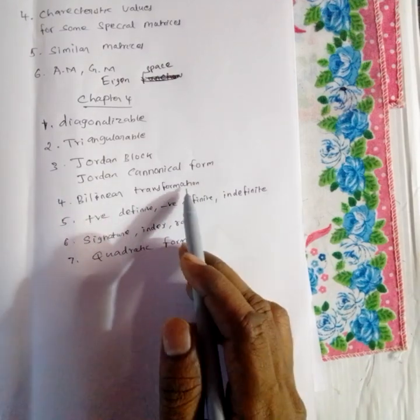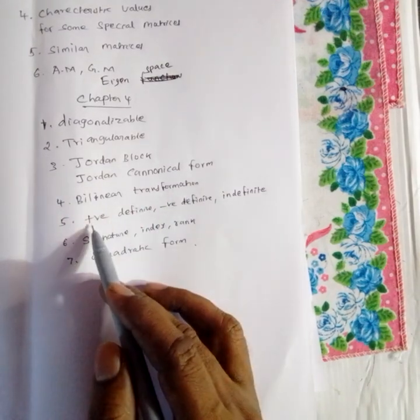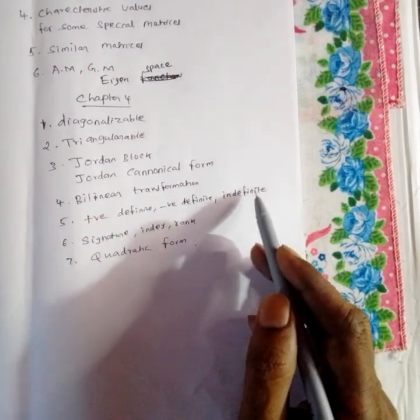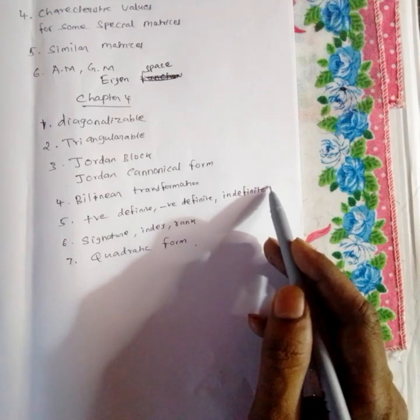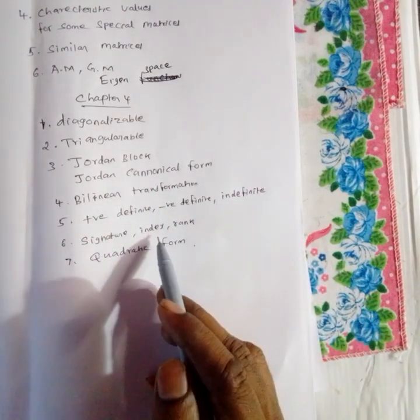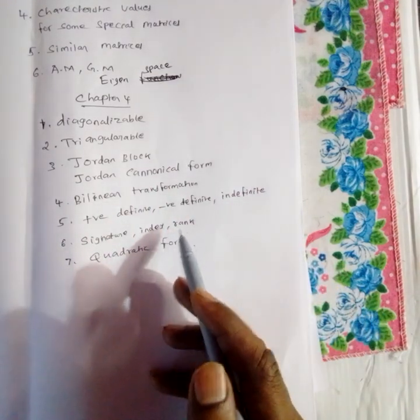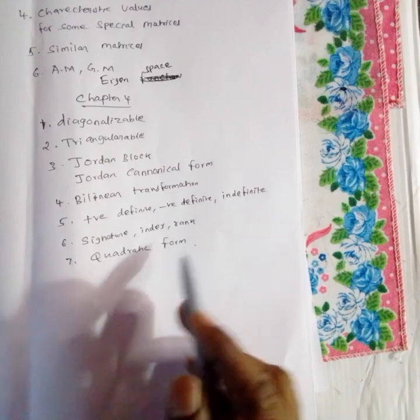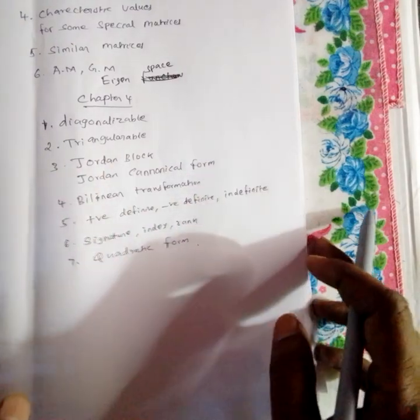Bilinear transformation. Positive definite, negative definite, indefinite. Signature, index, rank, quadratic form. So it is important. This is the 4th chapter.